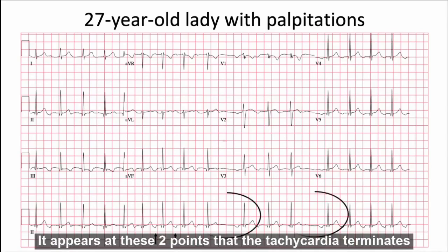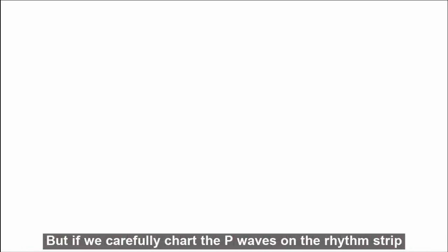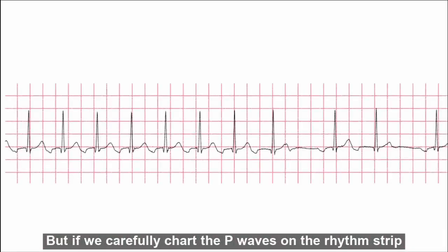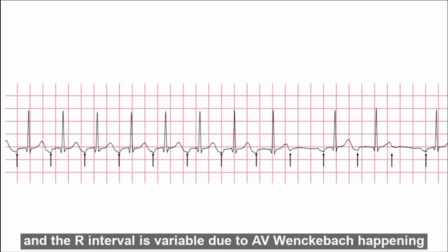It appears at two points that the tachycardia terminates and restarts again. But if we carefully chart the P waves on the rhythm strip, we can see that the tachycardia did not terminate and the RR interval is variable.